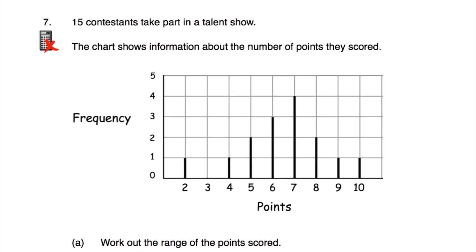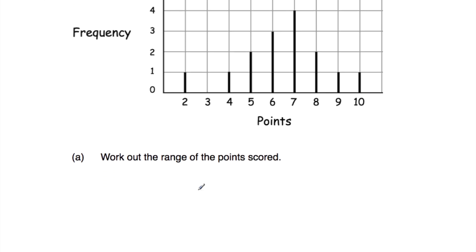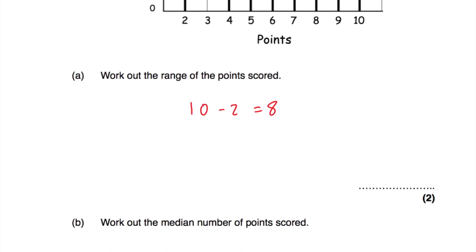Question number seven: 15 contestants take part in a talent show. The chart shows points scored — one person got two points, none got three, one got four, two got five, three got six, four got seven, two got eight, one got nine, and one got ten. Part A: work out the range. The highest was ten and the lowest was two, so ten minus two equals eight. The range is eight.